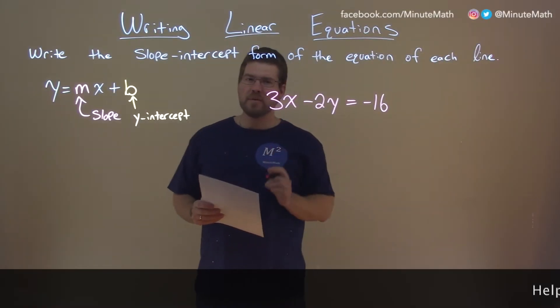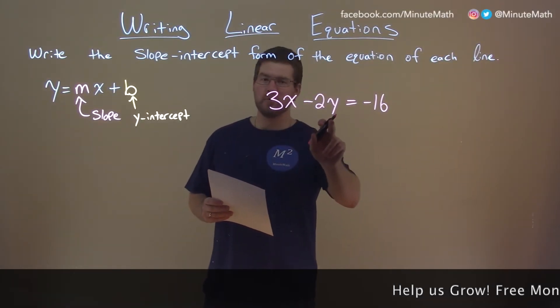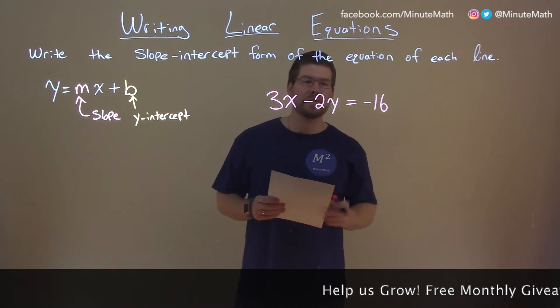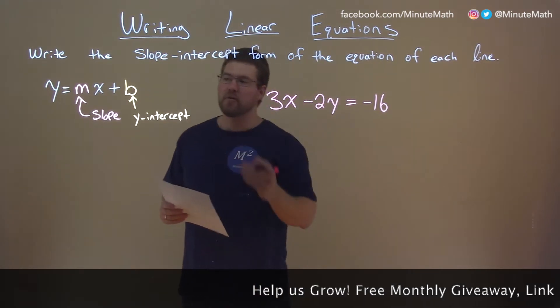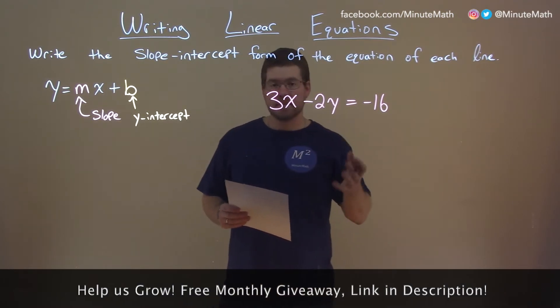So if I was given this problem, 3x minus 2y equals negative 16. Now we have our slope-intercept form here and what we want to do is really just get y by itself.